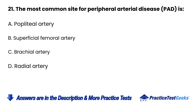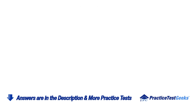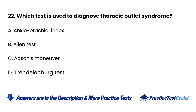Question 21. The most common site for peripheral arterial disease (PAD) is: A. Popliteal artery. B. Superficial femoral artery. C. Brachial artery. D. Radial artery.